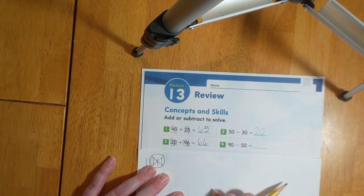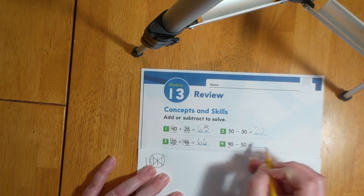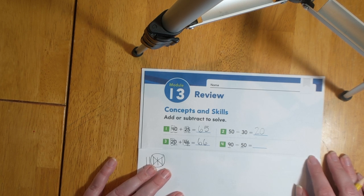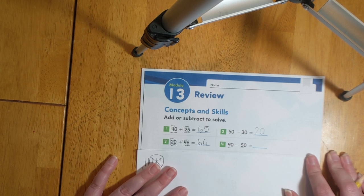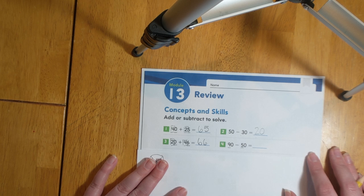Next let's take a look at number four. 90 minus 50. Let's use a fact family to solve this one. We have the numbers nine, five and we need to figure out what the third number is that makes up that fact family. We know that four plus five equals nine. So nine minus five equals four. Then we add our zero at the end to make it 40.